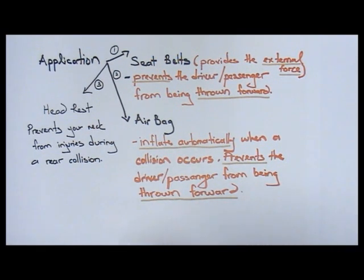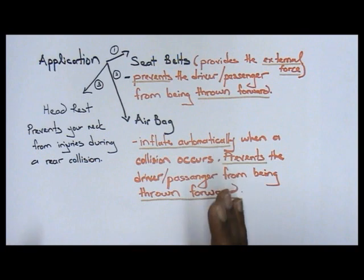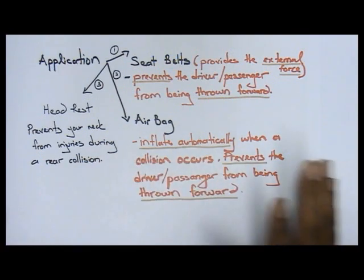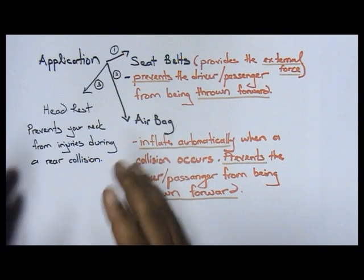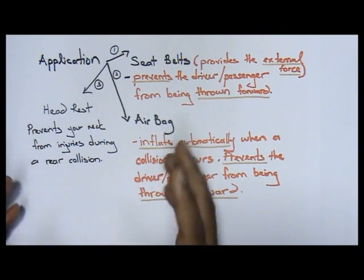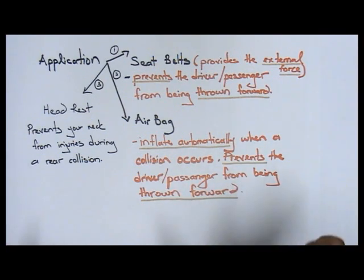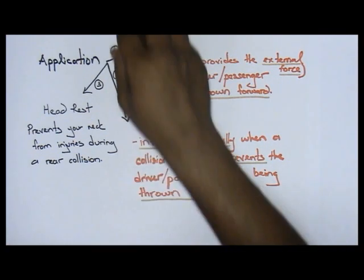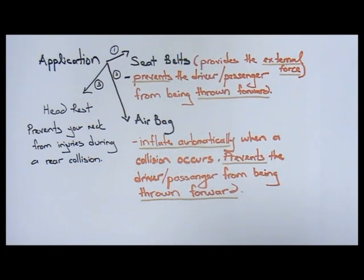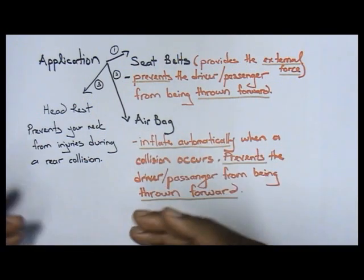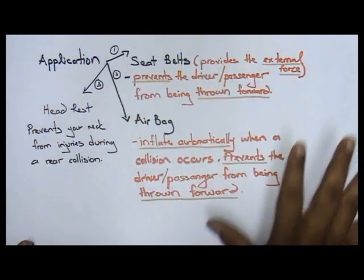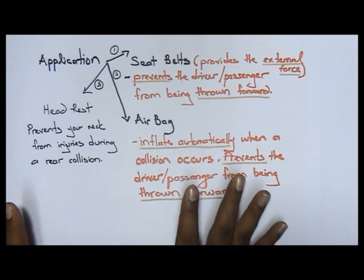Imagine a situation where you are sitting inside the car and a lorry hits your car. Your car is not moving. When the lorry hits your car, your body is in a state of rest, and your neck tends to move backwards — which causes a neck injury. That's why you have a headrest: it's the topmost part of your car seat and it prevents your neck from moving backwards. So don't remove your headrest. These are the three important applications of inertia.